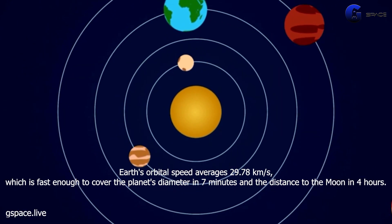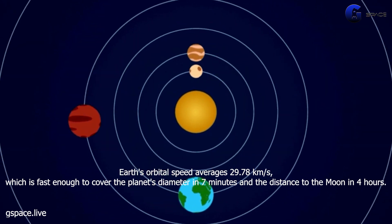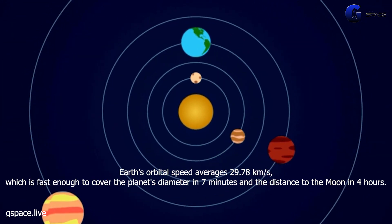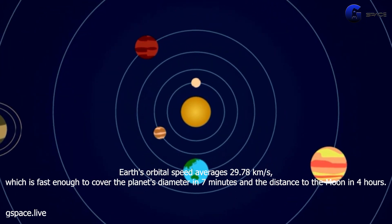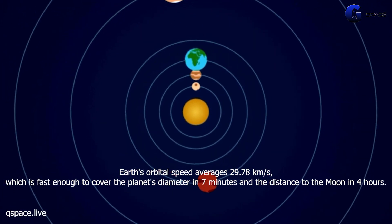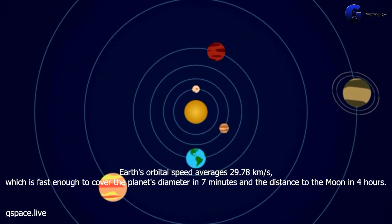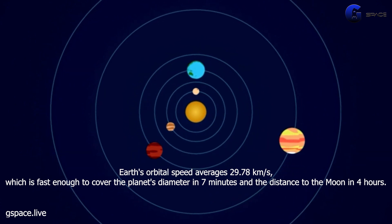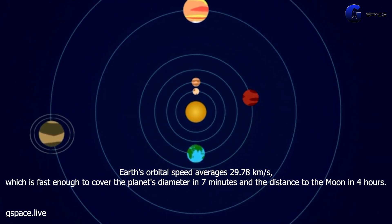Earth's orbital speed averages 29.78 kilometers per second, which is fast enough to cover the planet's diameter in 7 minutes and the distance to the Moon in 4 hours.